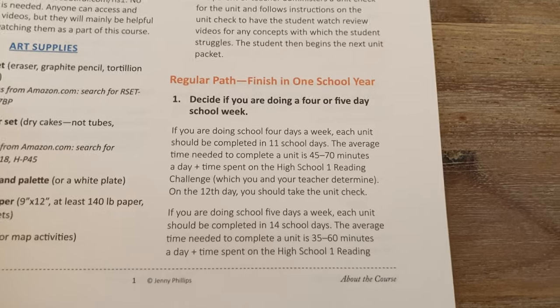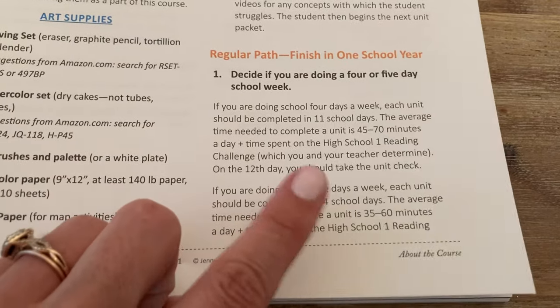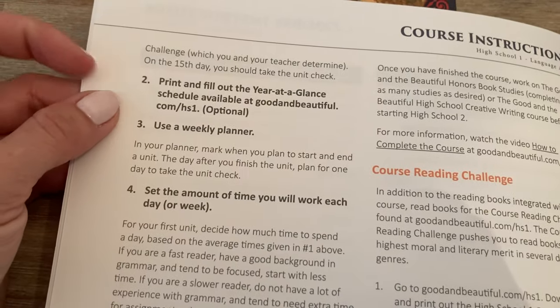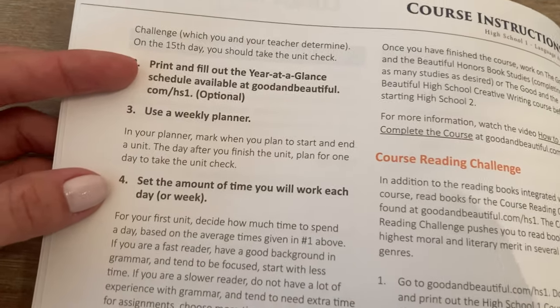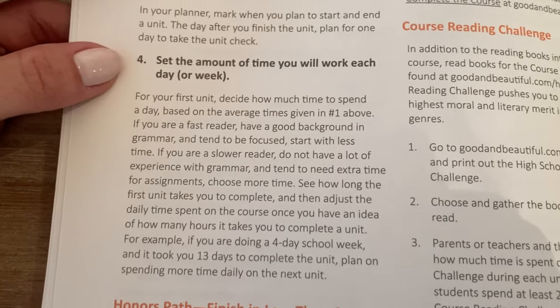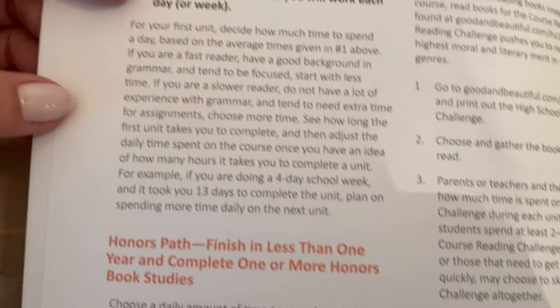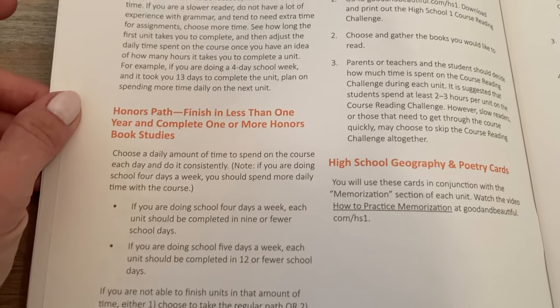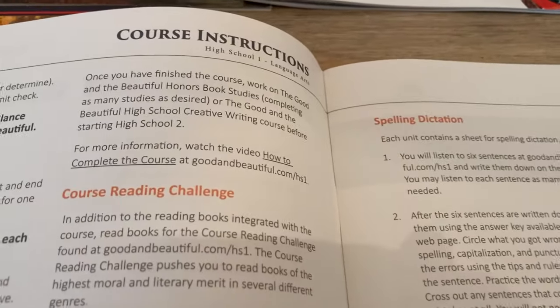This tells you the regular path to finish in one school year and lets you decide if you're doing a four or five day school week — this may vary for us depending on the week. It says to print and fill out the year-at-a-glance schedule, use a weekly planner, and set the amount of time you'll work each day or week. It also talks about what to do if you're a slower or quicker reader, and then explains the honors path. Right now we've tentatively decided he will do that by including one of the honors book studies — he chose The Screwtape Letters, which we have not ordered yet.